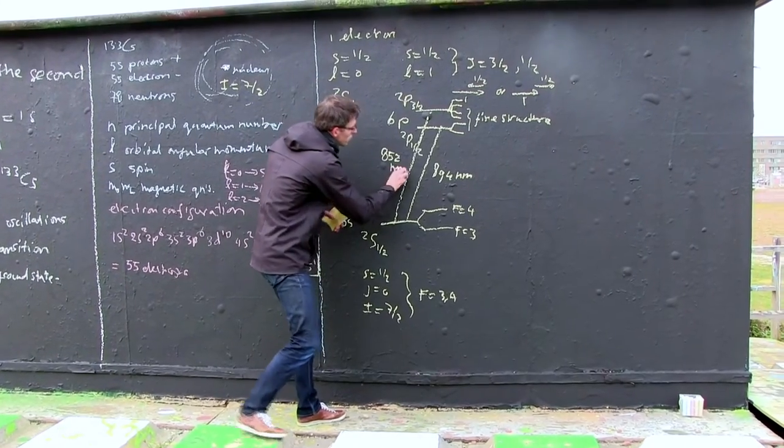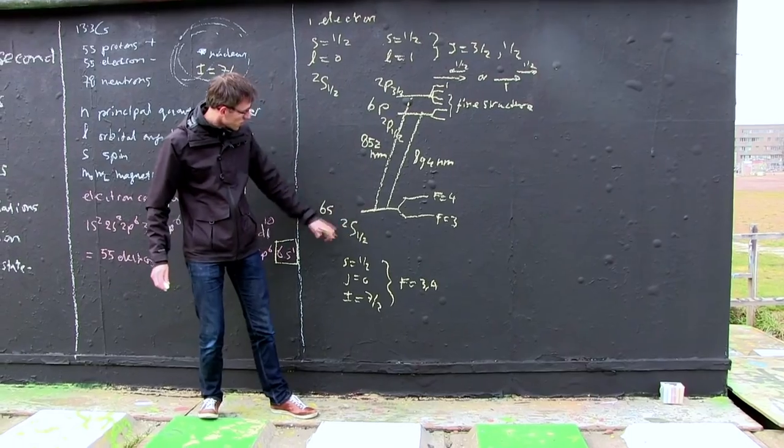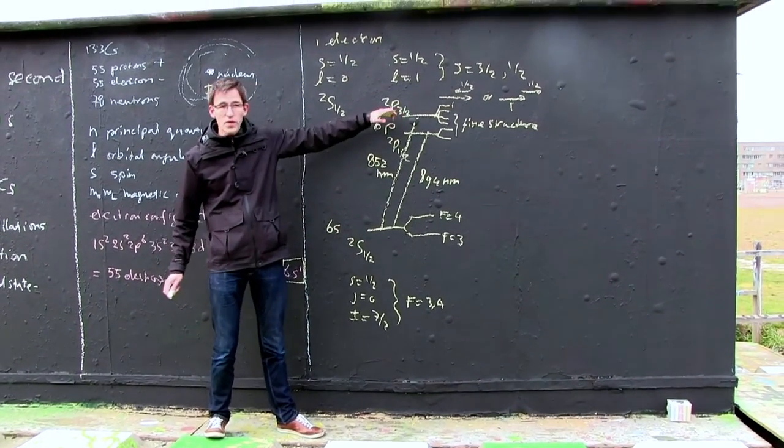If you shine 852 nanometer light on the cesium atom, it will also absorb that and make a transition from the 2s1/2 to the 2p3/2 level.